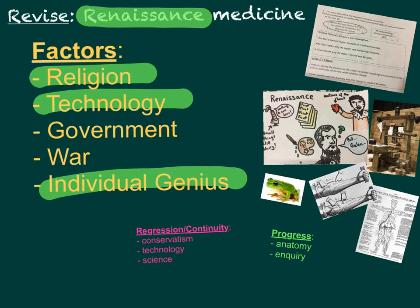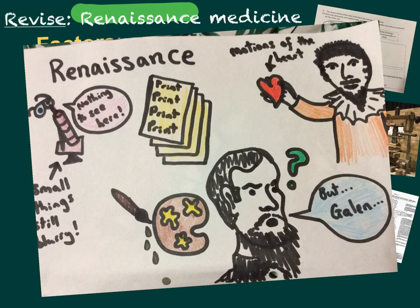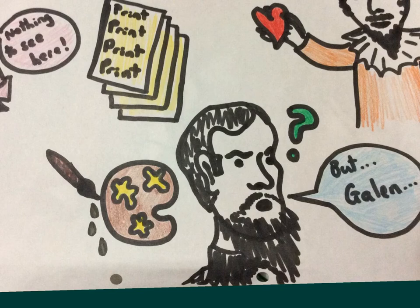Individual genius is something particularly important to talk about in terms of progress during this period. The two probably most important individual geniuses of the Renaissance were William Harvey, who discovered things about the motions of the heart, and Vesalius. Both made important discoveries about anatomy and developed anatomical knowledge. Part of this was because of new, more realistic styles of art, which made it easier to spread their ideas, as well as the decline of the church's power allowing human dissection.